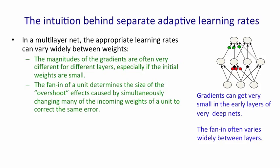Another factor that causes us to want different learning rates for different weights is the fan-in of a unit. The fan-in determines the size of the overshoot effects that you get when you simultaneously change many of the different incoming weights to fix up the same error. It may be that the unit didn't get enough input. When you change all these weights at the same time to fix up the error, it now gets too much input. Obviously, that effect's going to be bigger if there's a bigger fan-in.